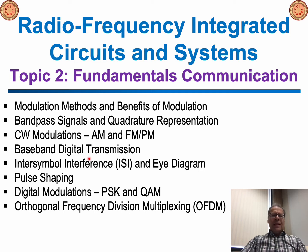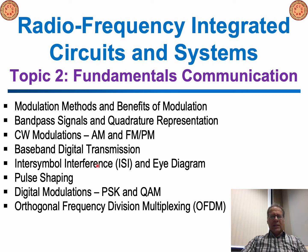Then I will look at baseband digital transmission, including the definition of inter-symbol interference or ISI in a digital transmitter and receiver platform, and introduce the eye diagram as a performance parameter used to evaluate the amount of ISI. Then I will look at pulse shaping as a powerful technique to improve ISI. I will also cover basic digital modulation schemes including phase shift keying or PSK and quadrature amplitude modulation or QAM, and finally orthogonal frequency division multiplexing or OFDM as a powerful multi-carrier scheme to improve bit rate and capacity.